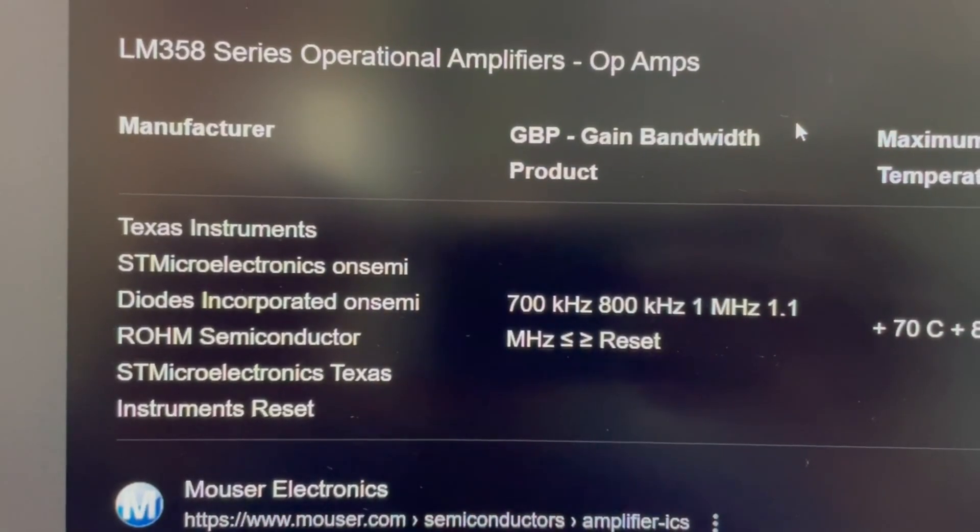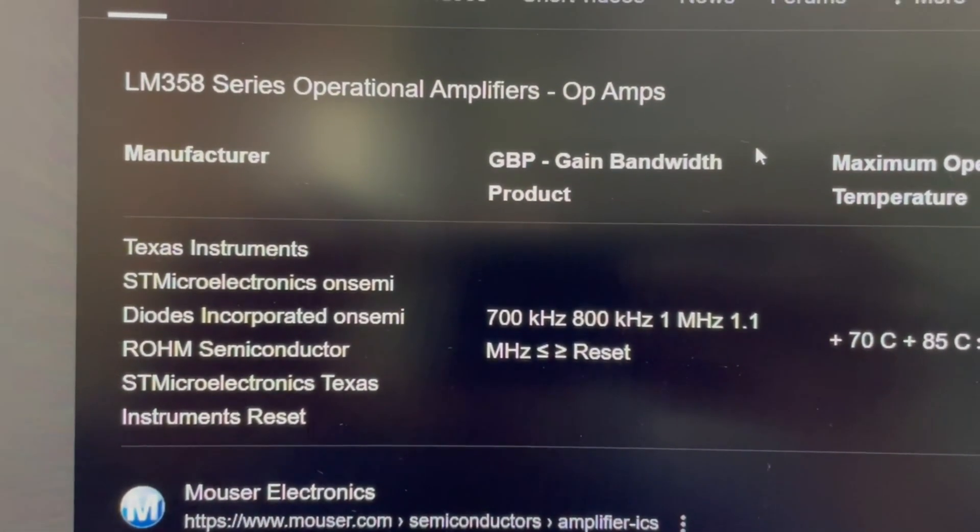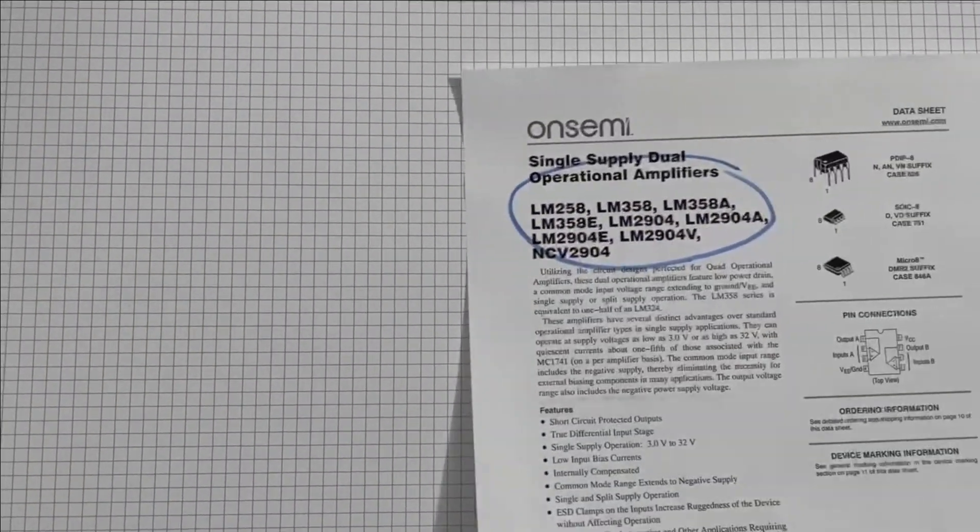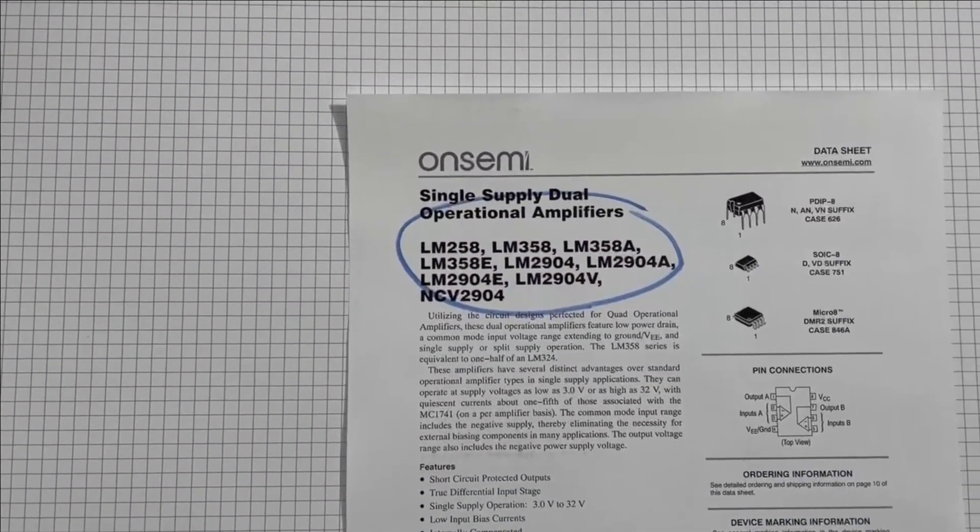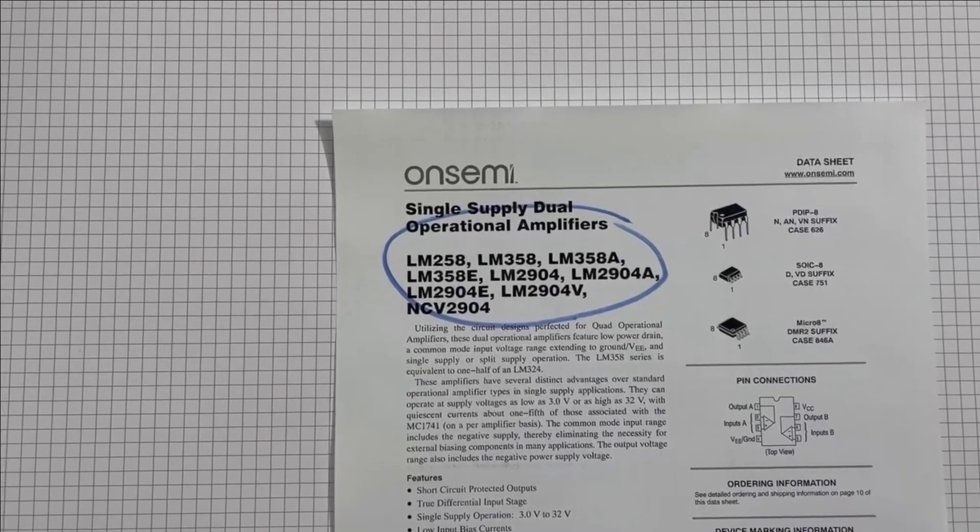Datasheet. This IC is made by many manufacturers, and most of them also have a datasheet for it. We can find some useful information here like a list of similar devices. Looking for an IC with 4 op-amps? It is in this list.